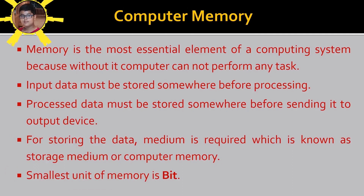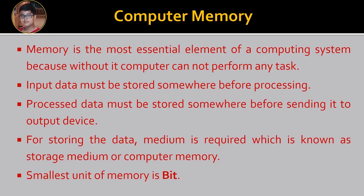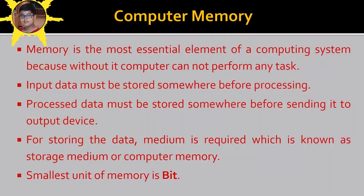Only two symbols — 0 and 1 — are used for storing any kind of data in a computer. The data may be text, graphics, pictures, or movies. All of this data is stored in the form of zeros and ones. For example, the character 'A' is stored in the computer in the form of 01000001.